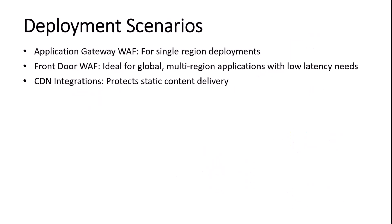So the deployment scenarios are: Application Gateway for single-region deployment; Front Door WAF for global multi-region applications with low latency needs; and CDN integration for static content delivery. Front Door also supports CDN — if there's static content, it will cache it at the edge for better performance.